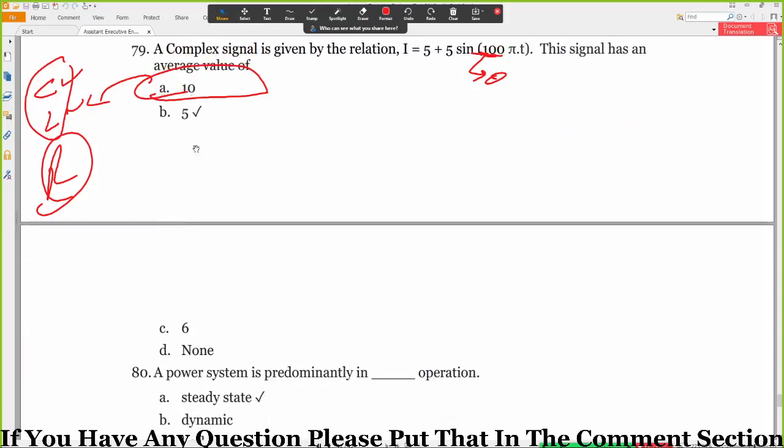Here will be minimum. Next, question 79: A complex signal is given by the relation I equals 5 plus 5 sine 100 pi T. That signal has an average value of, so average value is 5.